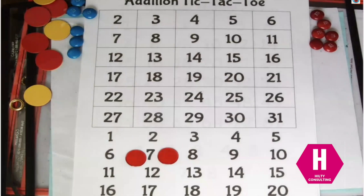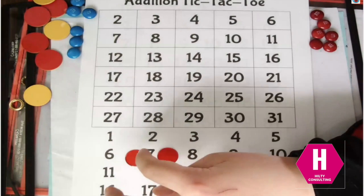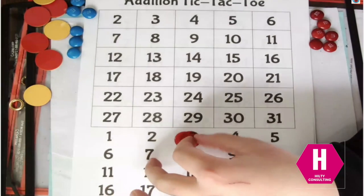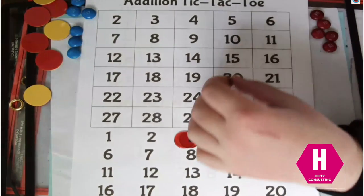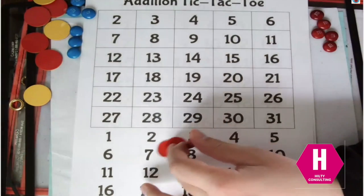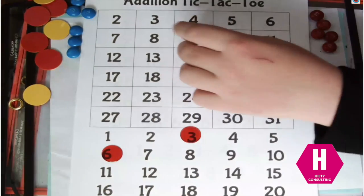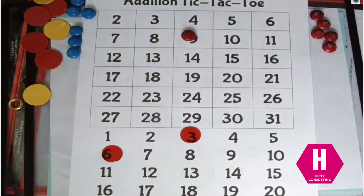Brett do you want to go first or do you want me to go first? I'll move first. Okay so he's going to take those and cover over any two parts he wants to. Three plus six equals nine. So he covered over the three and the six. He's putting his M&M over top of nine.